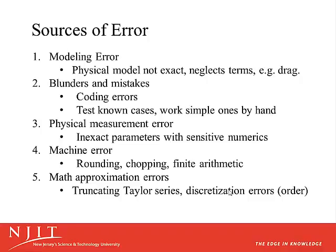Then there's physical measurement error. Maybe the inputs to our computer code are not exactly correct. Sometimes we get data from the literature, but we're not always certain that that data is correct — maybe it's off in further digits, maybe there are typos. Maybe we did an experiment and averaged the results of various experiments to get our physical input value, but maybe there are some error bars on that. If the physics that you're modeling is sensitive to those initial values, you have to be aware of what impact it might have on your results.